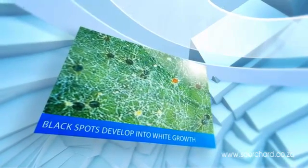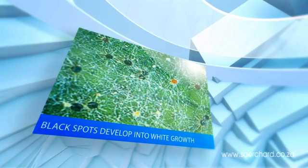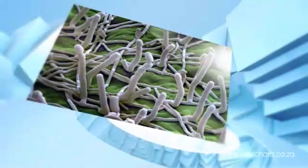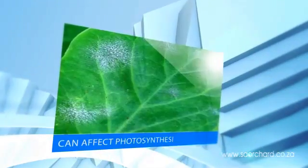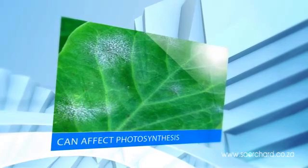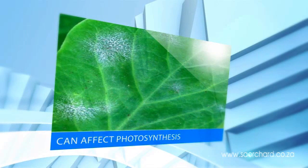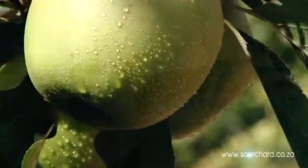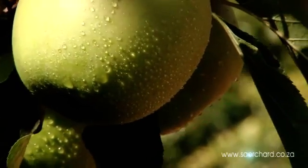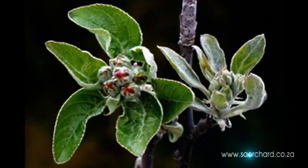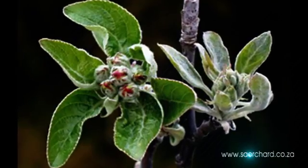It starts as a black dot and develops into spots or patches of white to greyish talcum powder-like growth. Although powdery mildew is unattractive it is rarely fatal. However it does stress the plant, and if enough of the leaf surface becomes covered with powdery mildew, photosynthesis is impaired. Insufficient photosynthesis can diminish the flavour and size of the fruit. If buds become infected they may not open and mature at all.